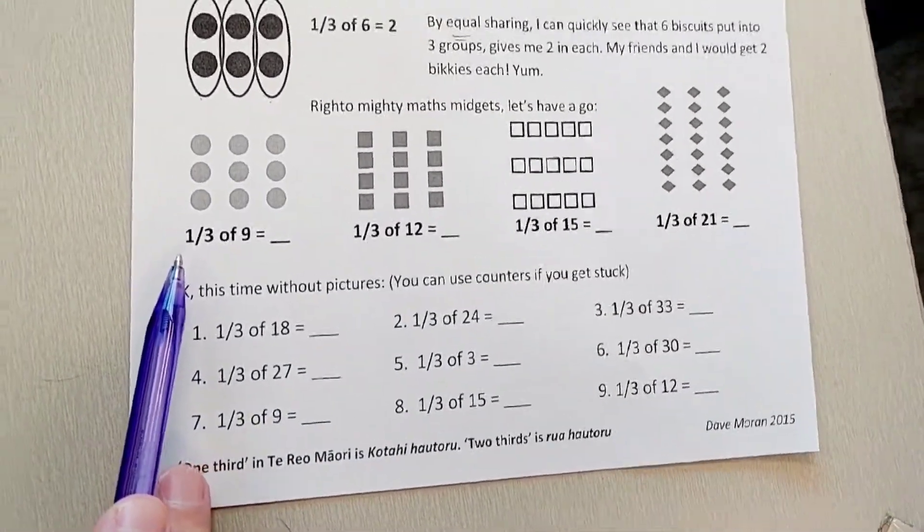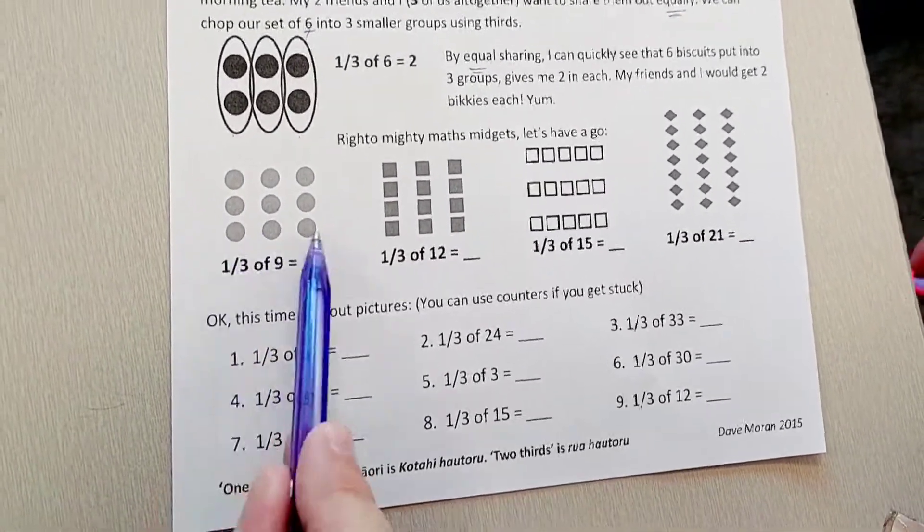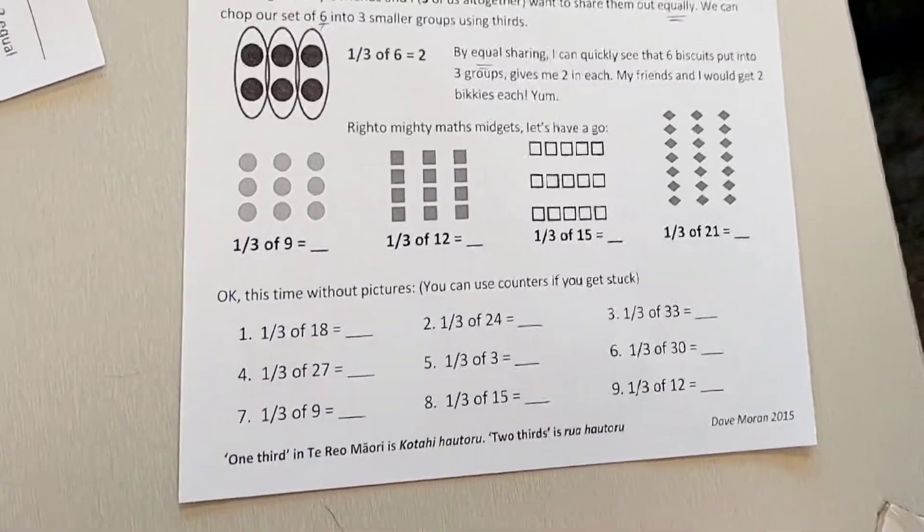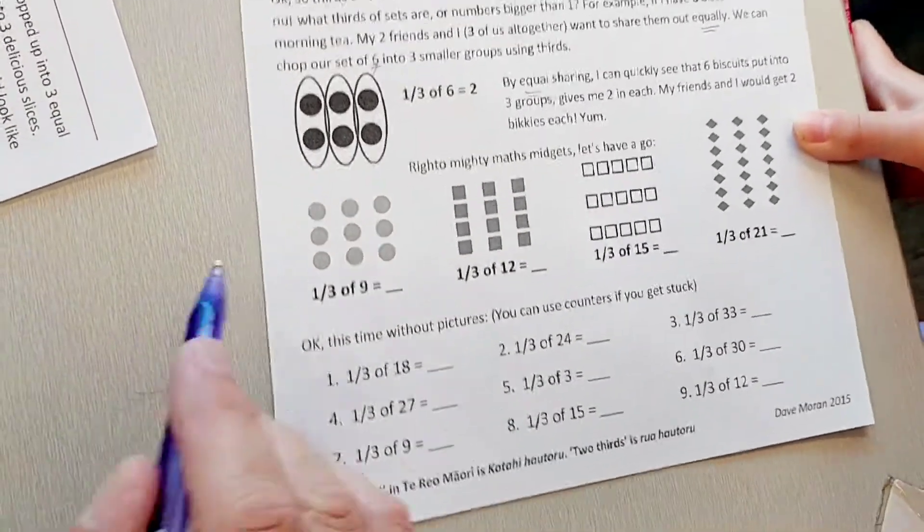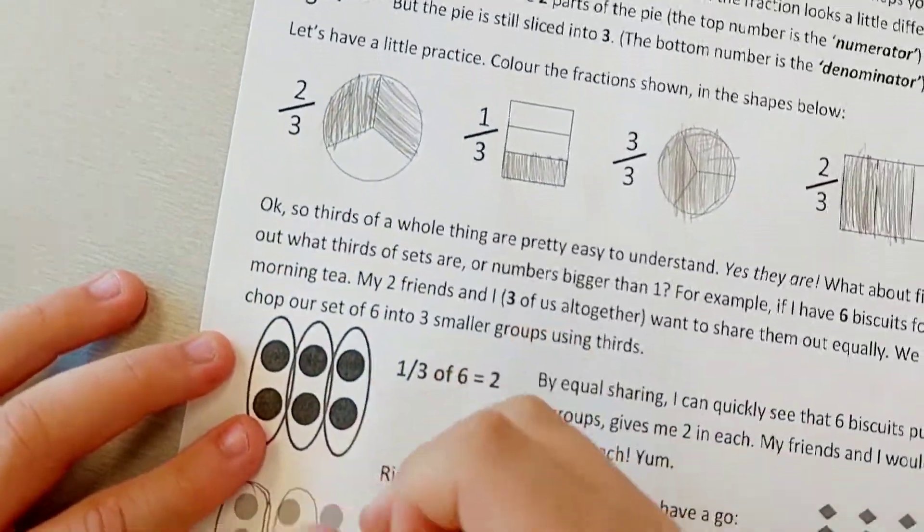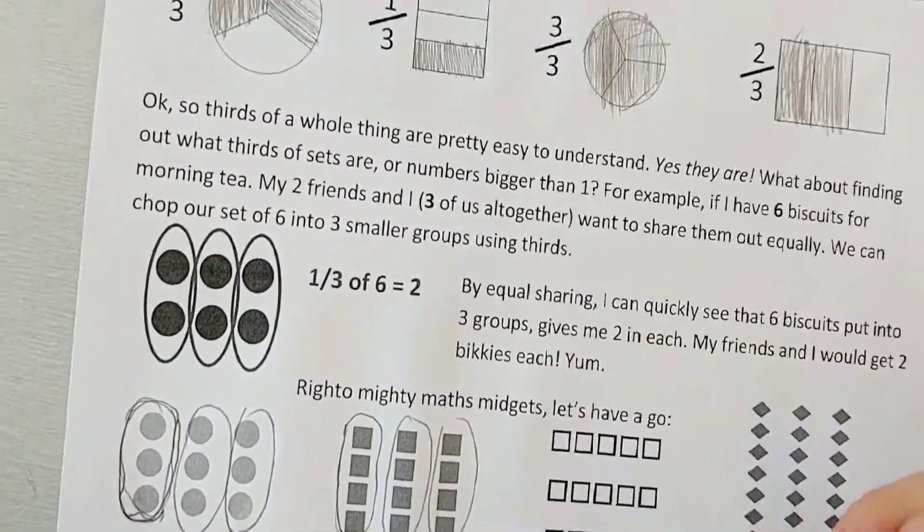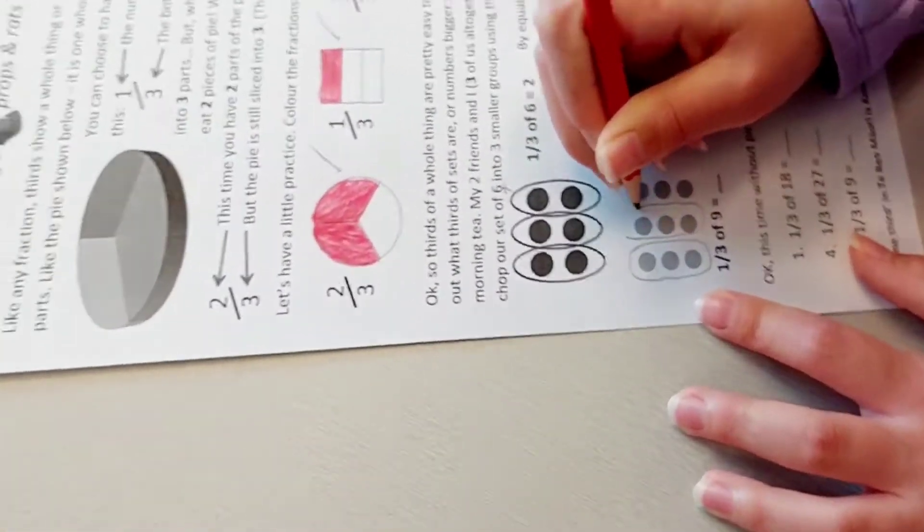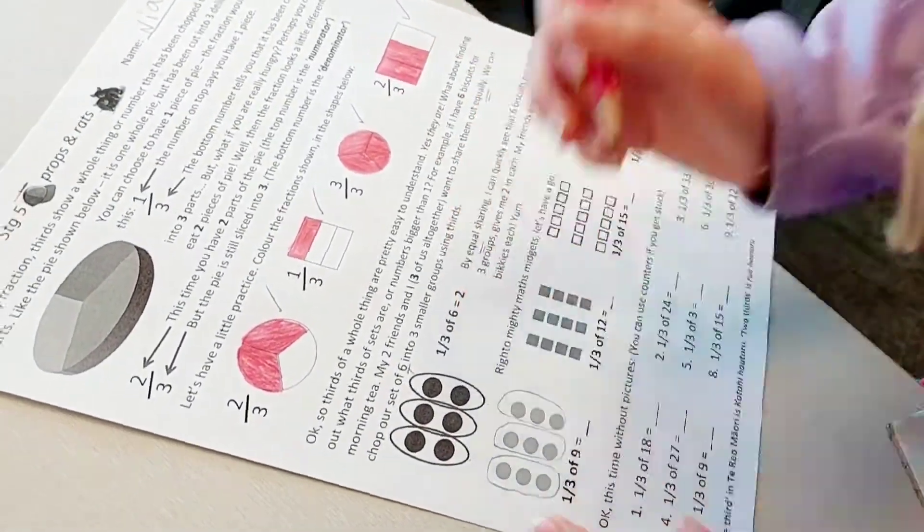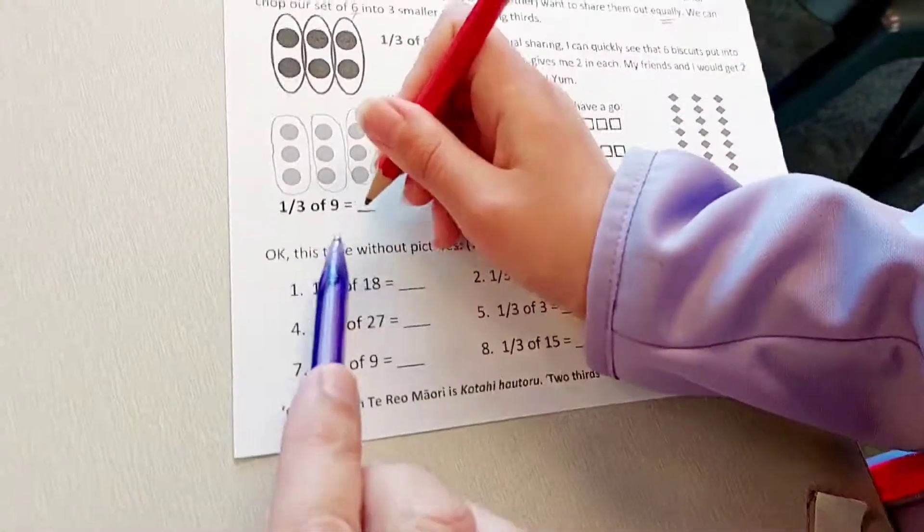So we're going to find out what one third of nine is. You can see that you could figure out what one third of nine is. So see if you can make this set into three equal groups. Draw them into circles like those number six there. You got it, that's perfect. Just make sure you've got three groups, not groups of three. So one third of nine is? Three!